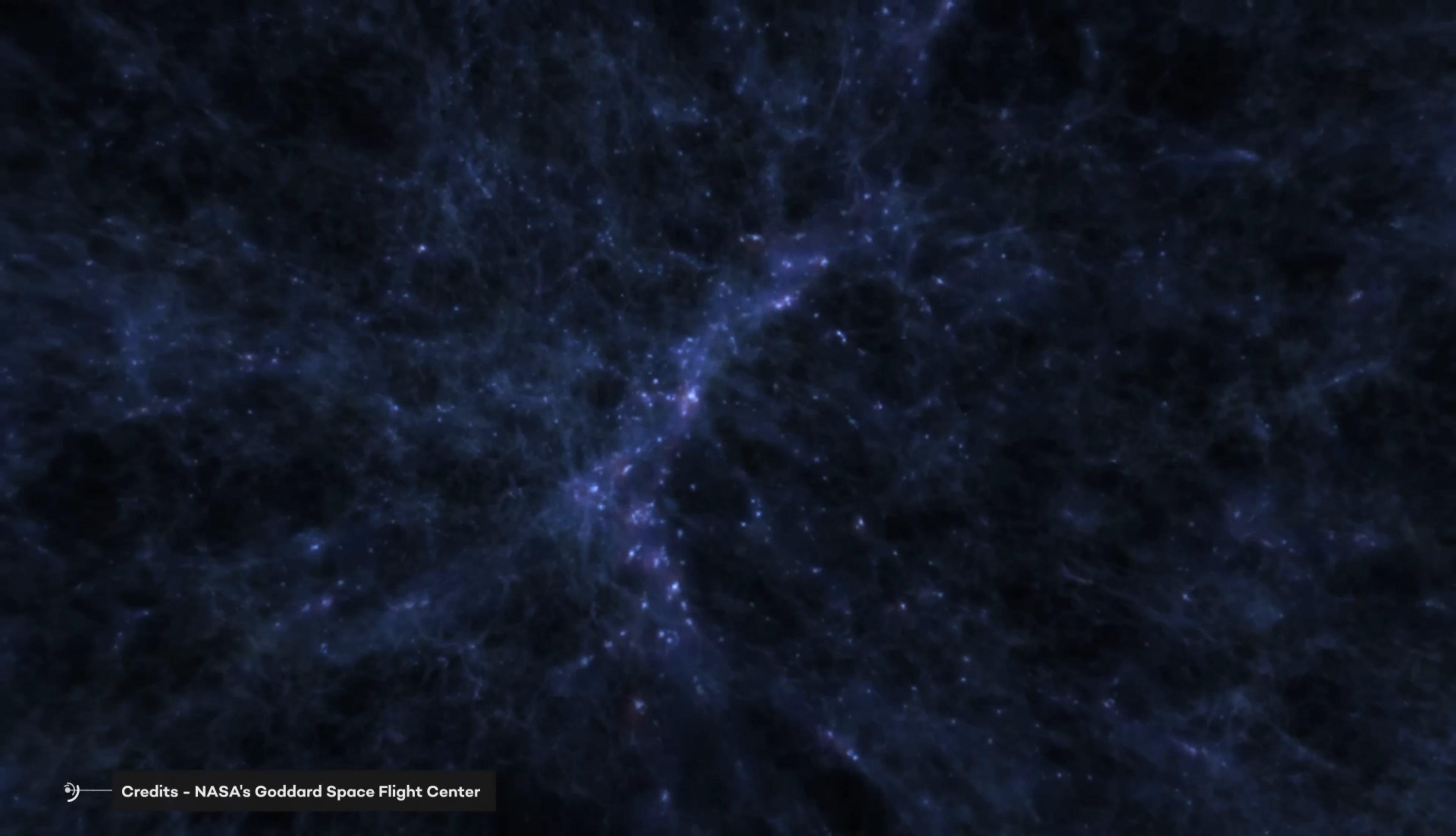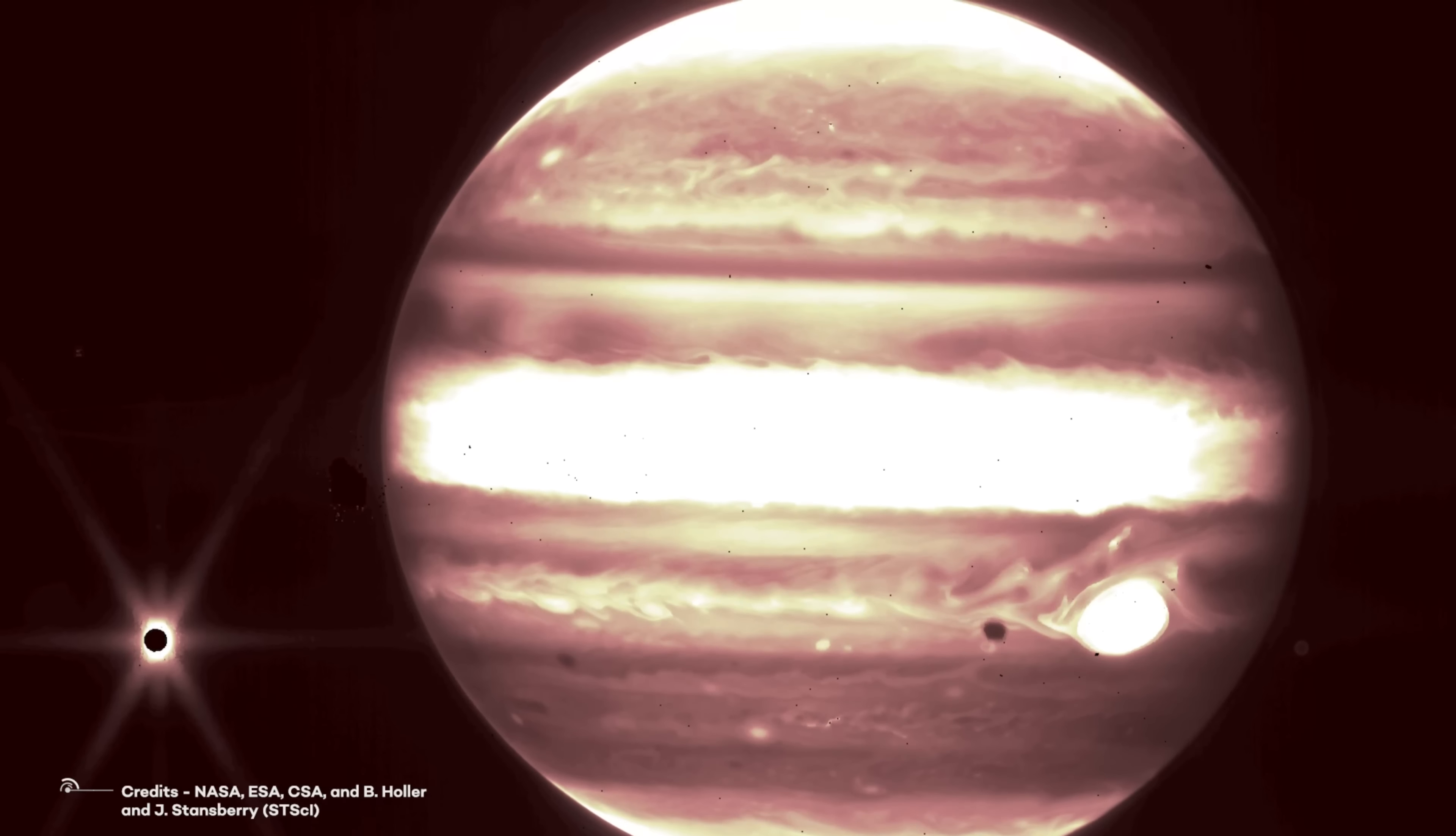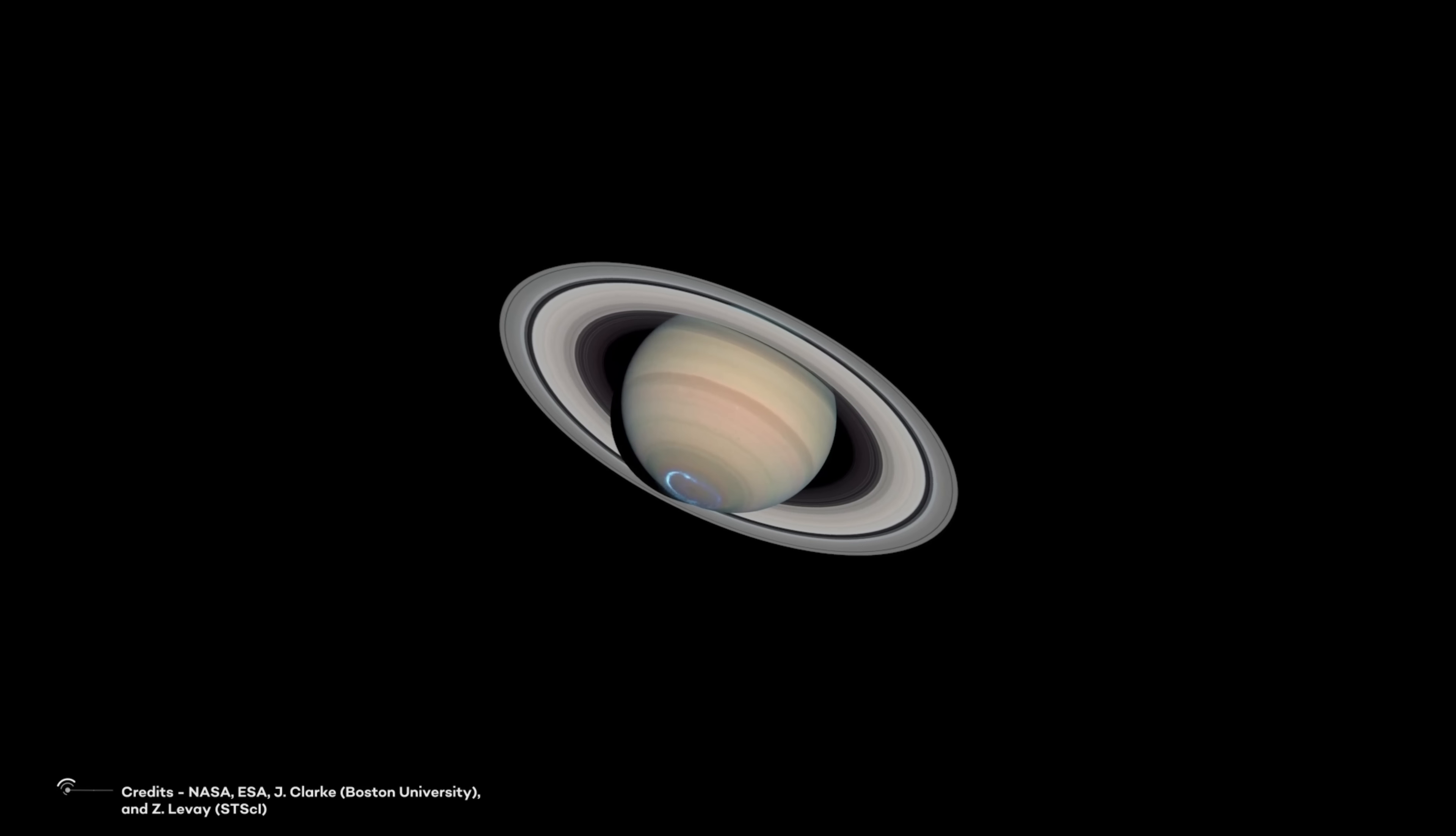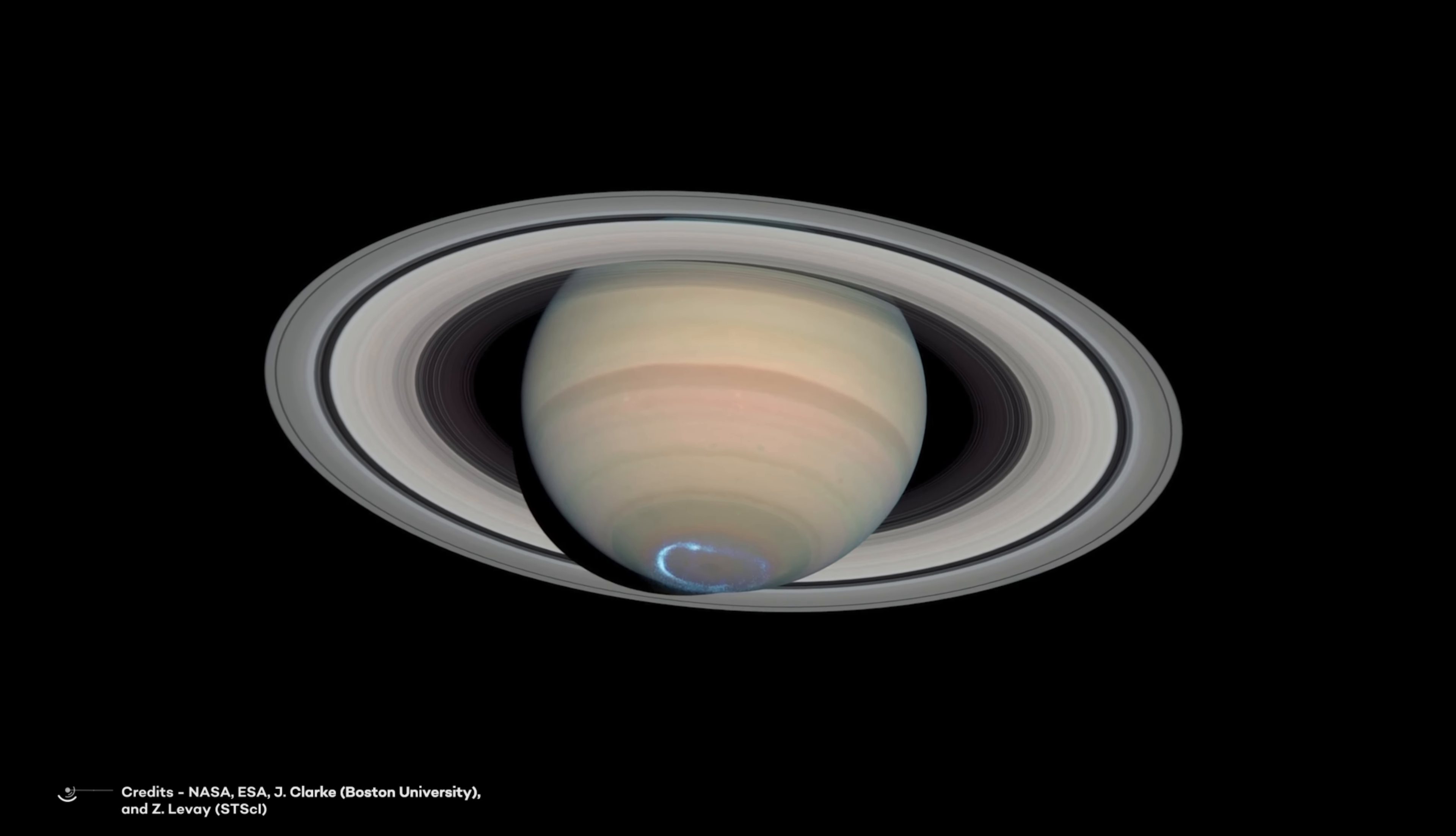Now, the telescope has turned its eye towards something much closer to home, our own solar system. The new images show Jupiter, Saturn, and their moons in unprecedented detail, providing scientists with a wealth of information about these familiar planets.